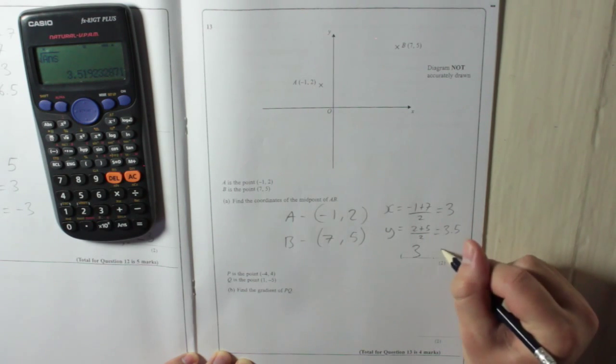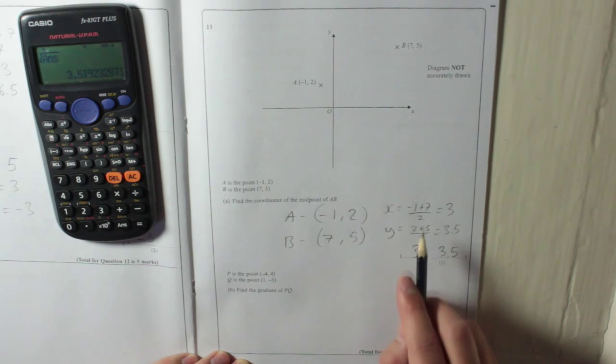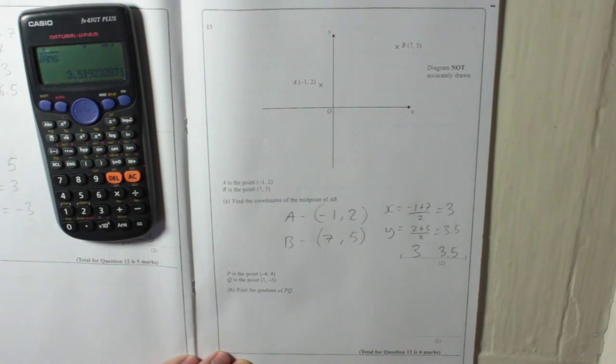So you end up with a y-coordinate of 3.5. But basically just remember that the midpoint is in between each one. In between, exactly in between. And that's how you find how far in between is. You just add them together, divide by 2. Right, next part.